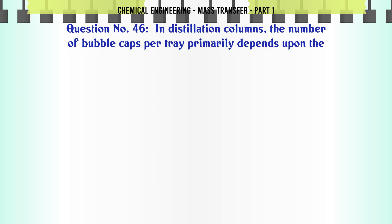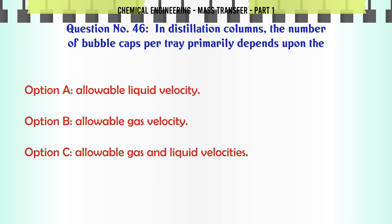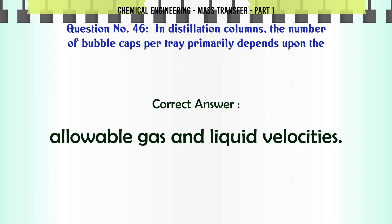In distillation columns, the number of bubble caps per tray primarily depends upon the: A. Allowable liquid velocity. B. Allowable gas velocity. C. Allowable gas and liquid velocities. D. Feed composition. The correct answer is Allowable gas and liquid velocities.